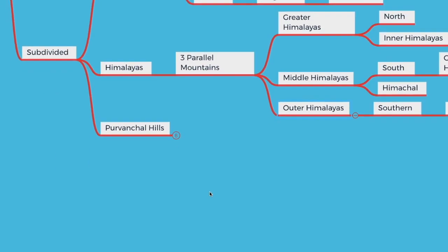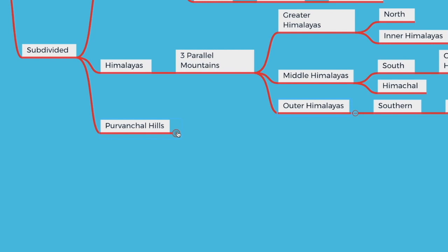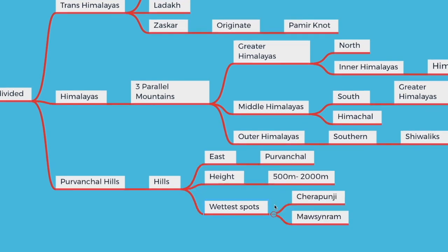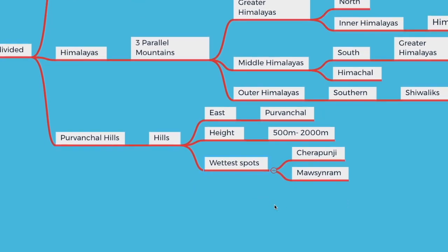Hills on the east are called Purwanchal. Their height is between 500 meters to 2,000 meters. In this part you will find a lot of thick forests. The hills of Khasi and Jaintia and the wettest spots like Cherrapunji and Mawsynram are found here.